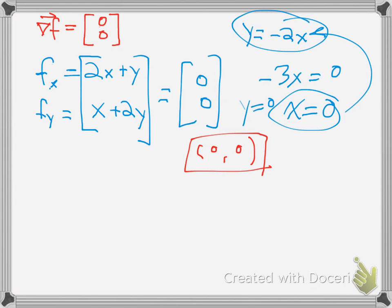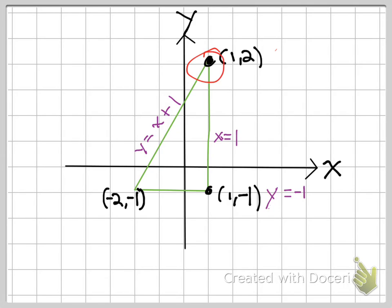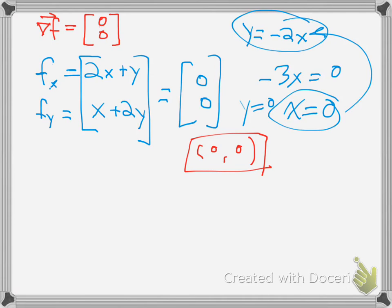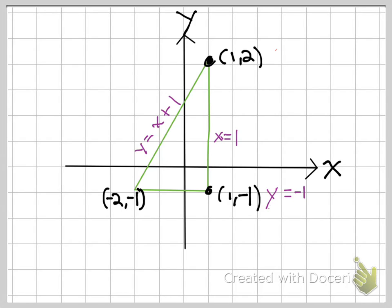Now let's find if there are critical points along the edges and the corners. Well, the corners we'll just check by looking at the values. But right now let's approach along y equals negative 1. We're going to figure out if there's any critical points on that line. Simply for the function, you just substitute wherever you see a y, you put negative 1, and now it's a function of x.